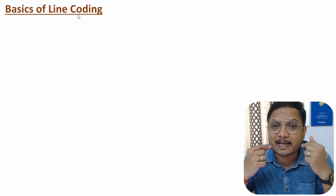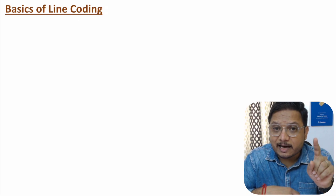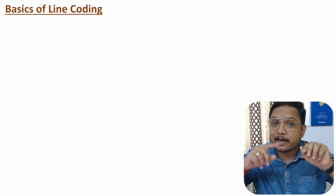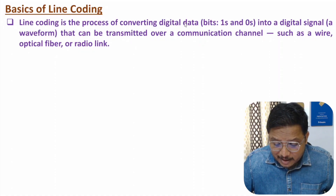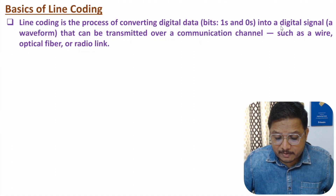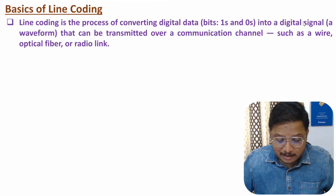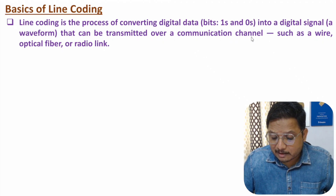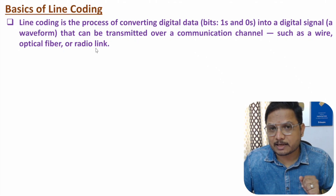Line coding is a process to convert digital data into digital signal. Here we will be converting ones and zeros into a waveform, so that the given digital signal can be transmitted effectively over a communication channel. This communication channel can be a wired channel, an optical fiber channel, or a radio link — meaning a wireless communication channel.